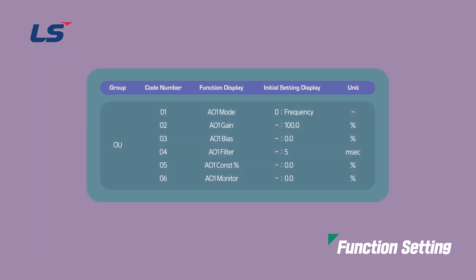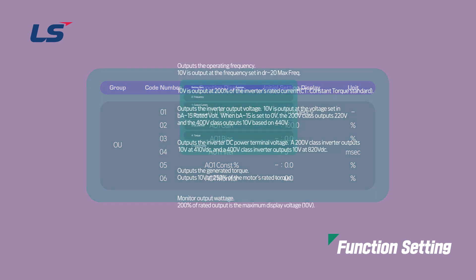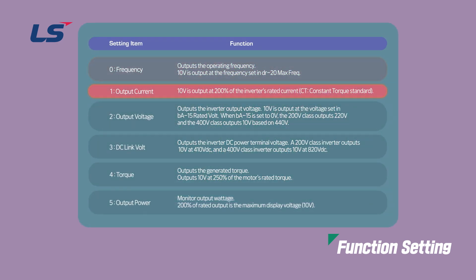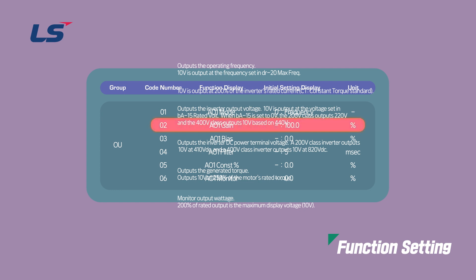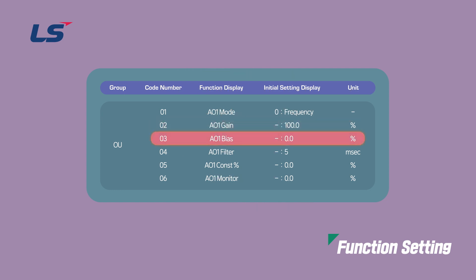Next, let's take an AC drive under 22 kW as an example. Parameters for analog output can be set in the OU group. The AO terminal is an analog output terminal; you can directly select the output items for AO in OU group number 1 parameter. Output items can be selected from operating frequency to fixed value output. In this video, we will select operating frequency 0. In OU group number 2, you can set the analog output gain, and in OU group number 3, you can set the bias value for analog output.